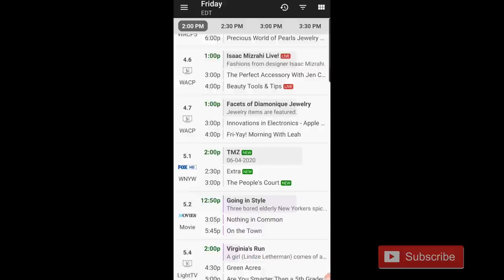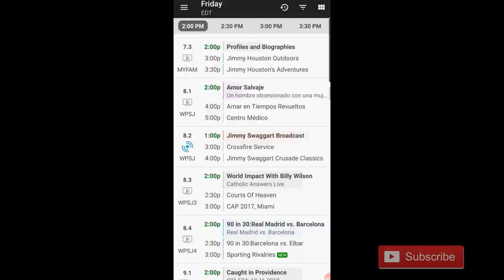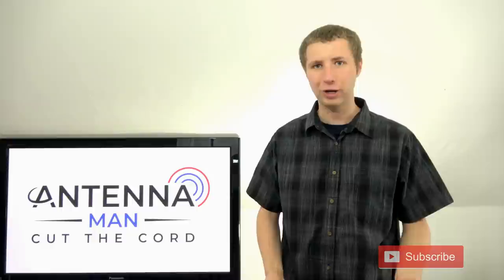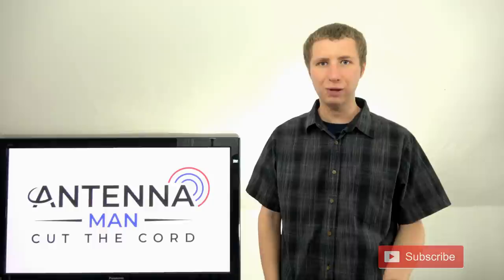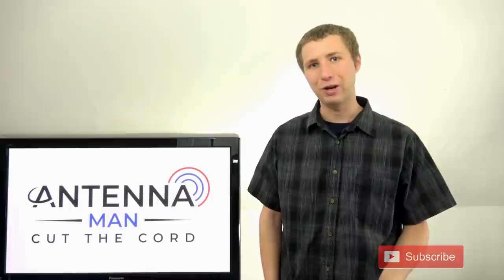Personally, I'm fine with just checking the channel guide on my smartphone when I'm ready to watch TV. I just sit down on my couch, open up the app, and then I see what's on channel 16, what's on channel 22, what's on channel 29, and I get to see what's on or what's coming on next half hour.